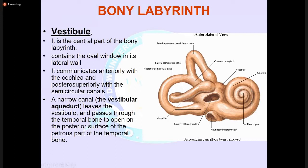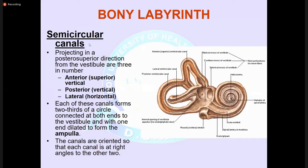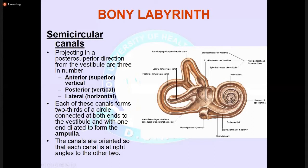The vestibule is the central part of the bony labyrinth. It contains the oval window in its lateral wall, and communicates anteriorly with the cochlea and posterosuperiorly with the semicircular canals. The vestibular aqueduct leaves the vestibule and passes through the temporal bone to open on the posterior surface of the petrous part. The bony labyrinth contains three semicircular canals projecting posteriorly into the vestibule — anterior, posterior, and lateral — each canal forming two-thirds of a circle; they are oriented at right angles to each other to provide orientation in three dimensions.